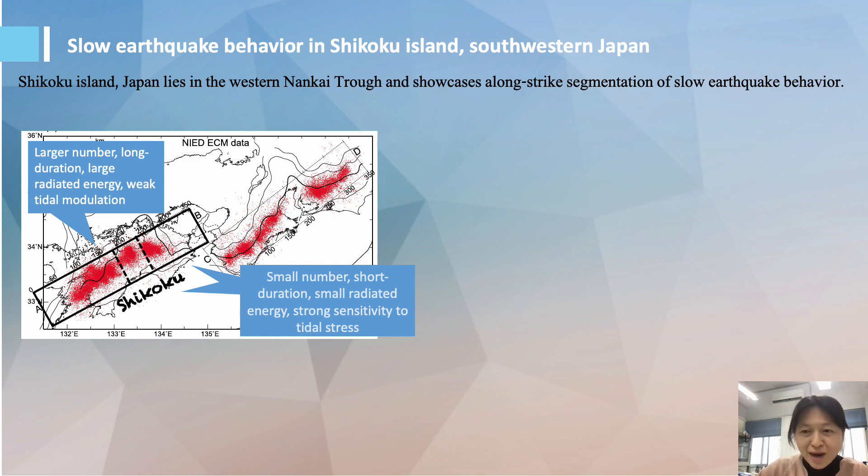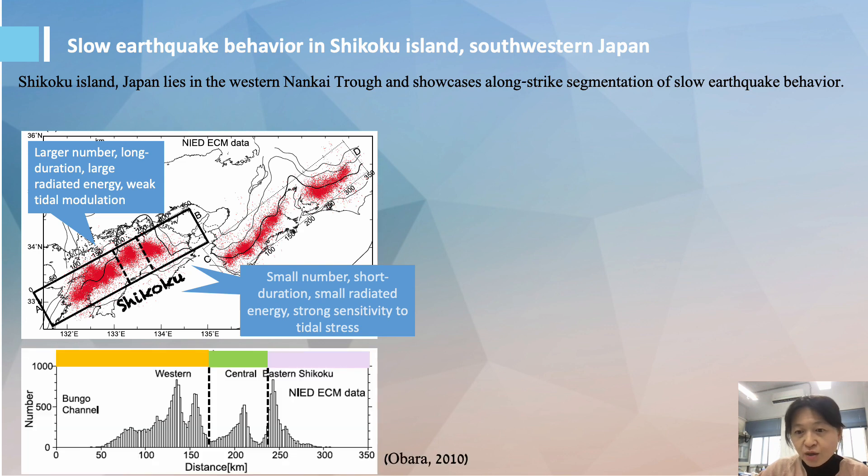Also, the presence of long-term slow slip events plus longer recurrence intervals for short-term slow slip events. And based on tremor activity concentration in space, Obara in 2010 classified the tremors in Shikoku into three areas as Western, Central, and Eastern Shikoku.